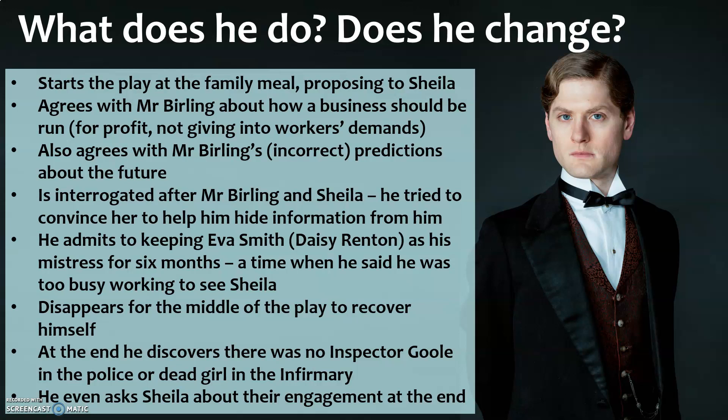What does Gerald do throughout the play? He starts at the family meal by proposing to Sheila very early on. There's a lot of Gerald agreeing with Mr Burling about business — how it should be run for profit, not giving in to workers' demands — and when Mr Burling talks about sacking the workers, Gerald is all in agreement. He also agrees with Mr Burling's incorrect predictions: when Burling makes his big speech about how war is not going to happen, Gerald agrees, which makes him seem part of that capitalist side.